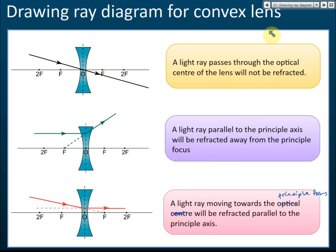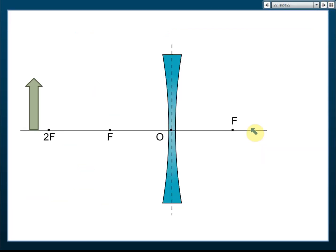This label should be corrected to 'concave lens' — this is a concave lens. Now let's look at this example: we have a concave lens with an object placed in front of it, and we need to draw the ray diagram.